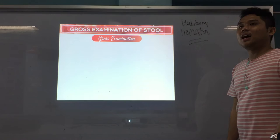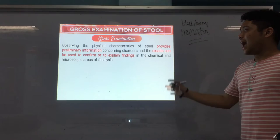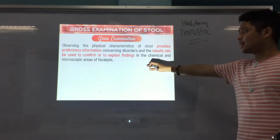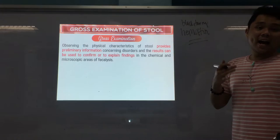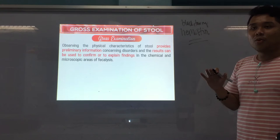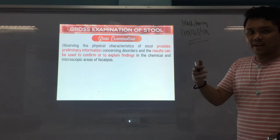The results of your gross examination or physical examination can be used to correlate between the results of your microscopic and chemical analysis. For example, if you have loose, watery consistency of stool, you could probably see trophozoites in your stool — but not cysts, because trophozoites prefer a liquid, fluid, watery environment. That is why the consistency of stool where you can see trophozoites is usually loose, diarrheal, or watery.